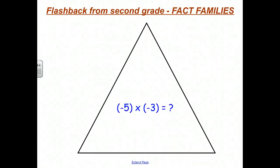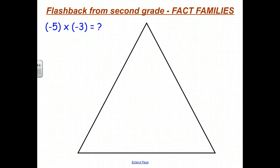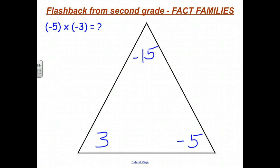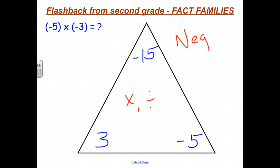Now let's take a look at something: what about negative 5 times negative 3? I actually want to start with the division. Let's go back to our fact family that we had before: 3, negative 5, and negative 15. Based on this fact family, I'm going to ask you to pause the video for a second and see if you can come up with it on your own. What does the rule have to be for a negative divided by a negative? Go ahead and pause the video and see what you come up with.